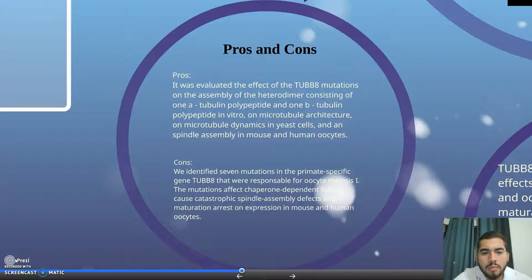The study evaluated the effect of TUBB8 mutations on the assembly of the heterodimer consisting of one alpha-tubulin polypeptide and beta-tubulin polypeptide in vitro, on microtubule architecture, on microtubule dynamics in yeast cells, and on spindle assembly in mouse and human oocytes.